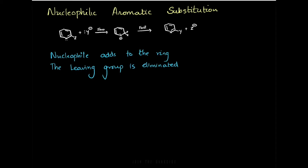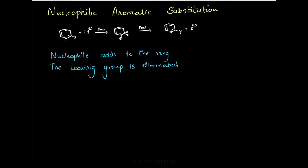There are only two steps in the nucleophilic aromatic substitution reaction. The first step is the nucleophile adds to the ring where the leaving group is present. The nucleophile comes and attacks this carbon, thrusting the electrons onto nitrogen, giving a negative charge on nitrogen. In the next step, as these electrons come in, the leaving group Z is going to leave.